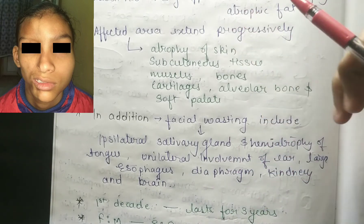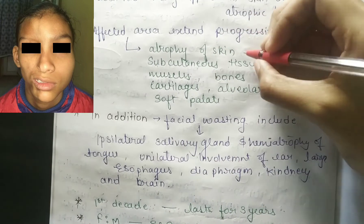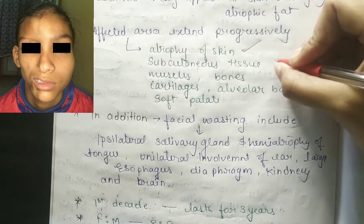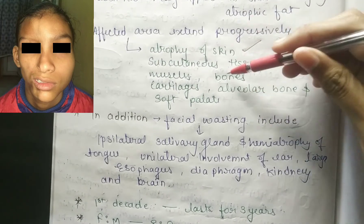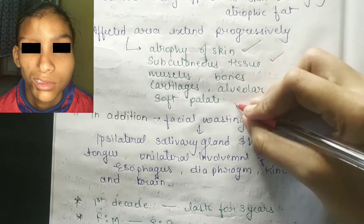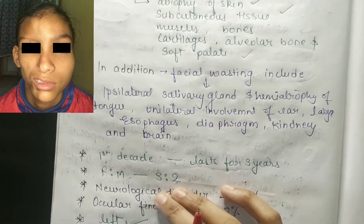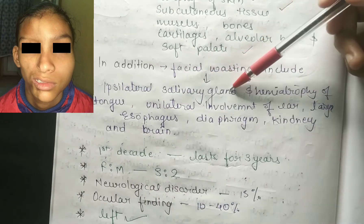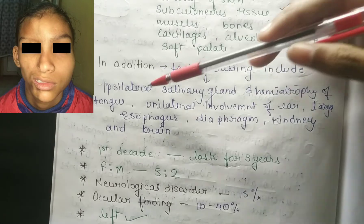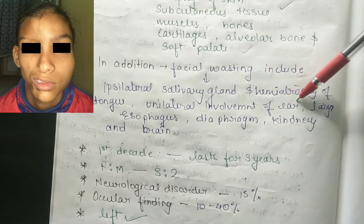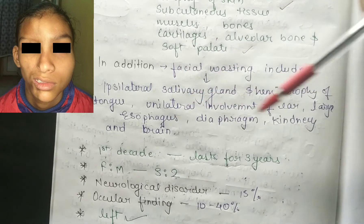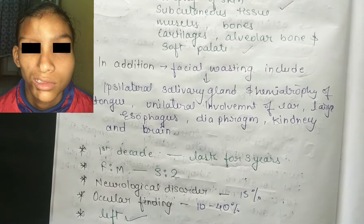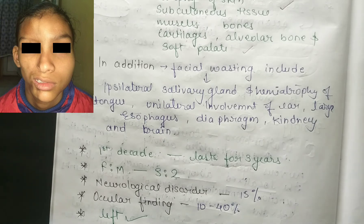Progressively, other parts of the body become affected — it can spread to the neck. Clinical features include progressive atrophy of skin, subcutaneous tissue, muscle, bones, cartilage, alveolar bone, and soft palate. Facial wasting is also included, causing ipsilateral salivary gland and hemi-atrophy of the tongue, and unilateral involvement of the ear, larynx, and esophagus.